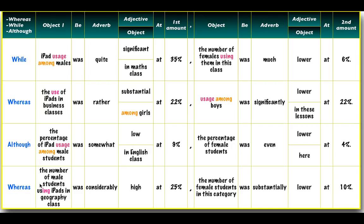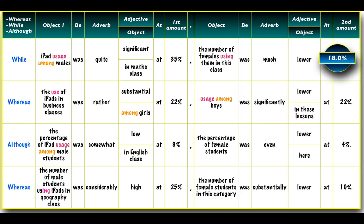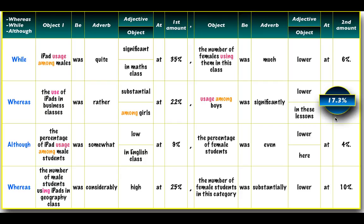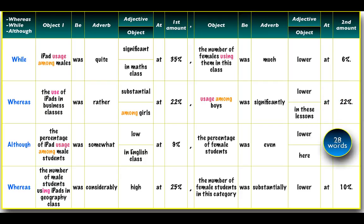The last example uses 'whereas' again: 'whereas the number of male students using iPads in geography class was considerably high at 25%, the number of female students in this category was substantially lower at 10%.' These adverbs — substantially, significantly, considerably — and their adjective forms substantial and significant are good words to practice. These sentences net up to 27 words, 26 words, and 28 words respectively.